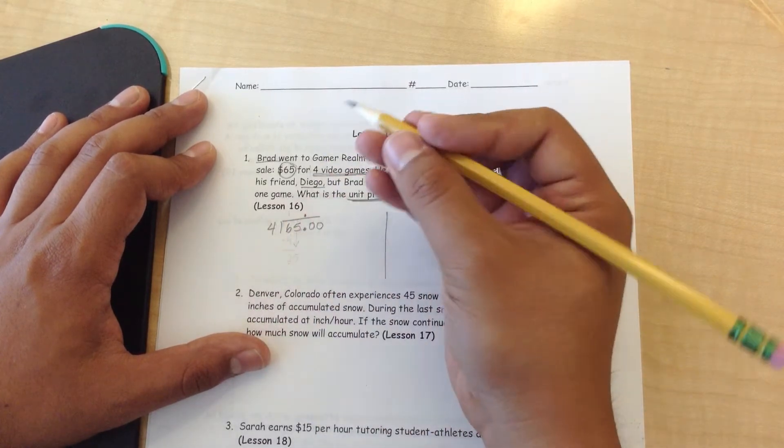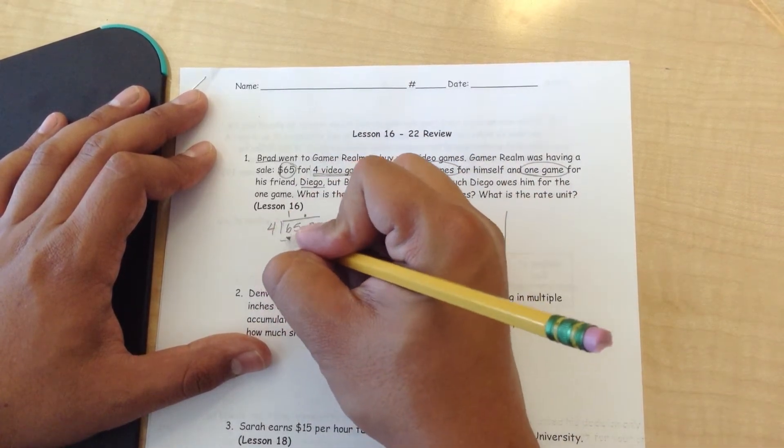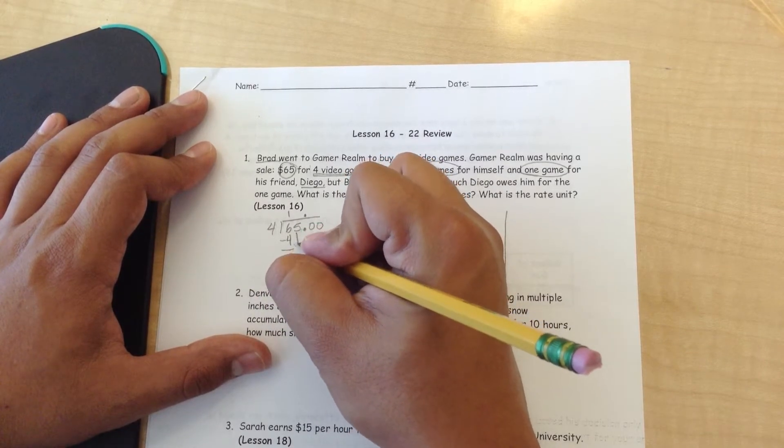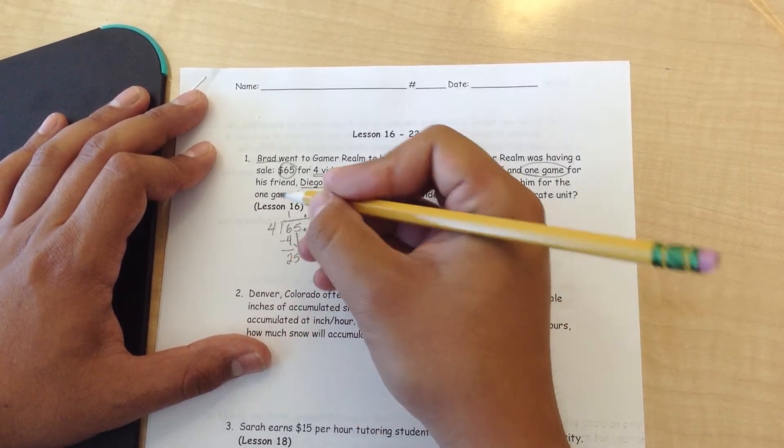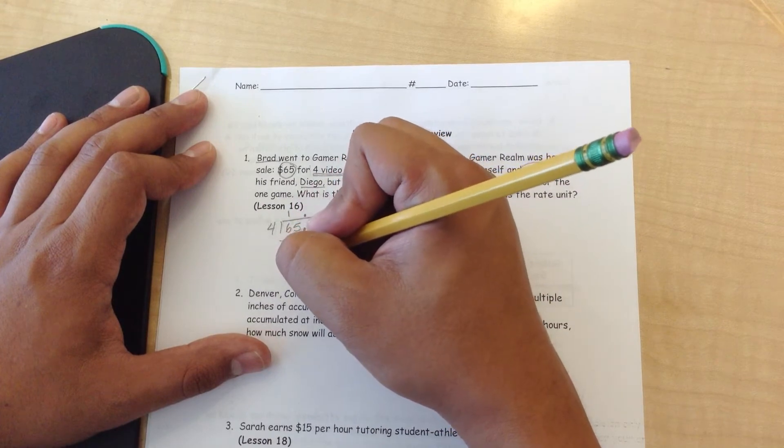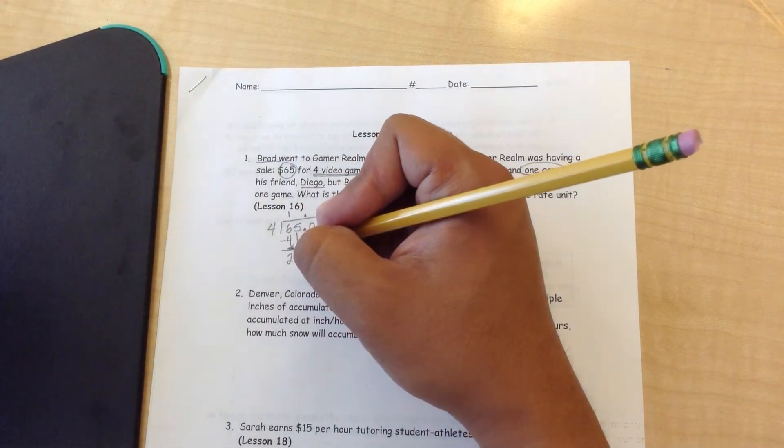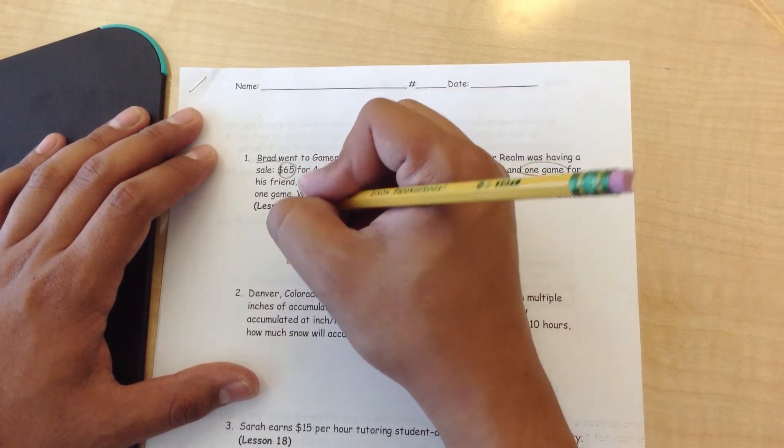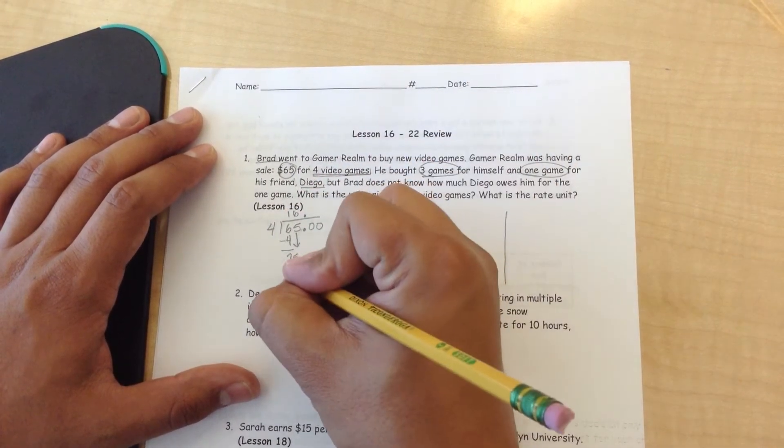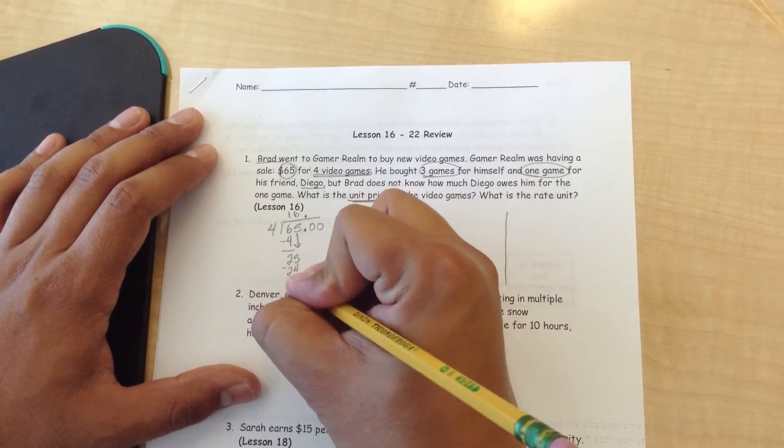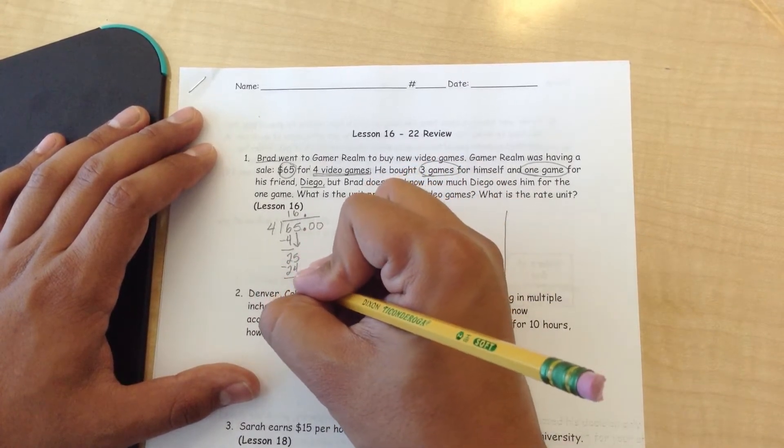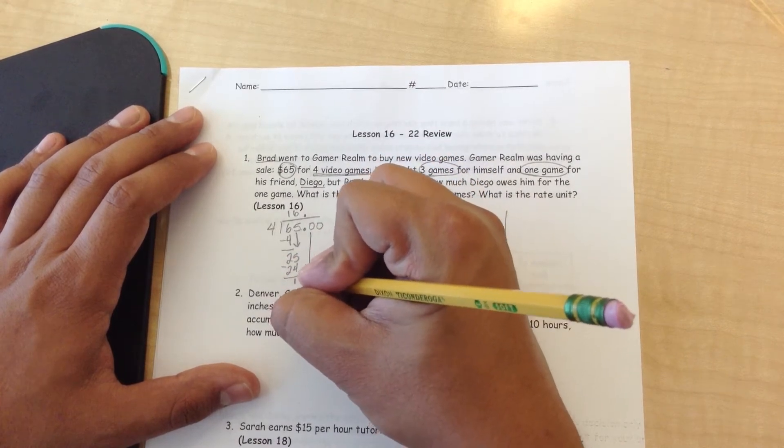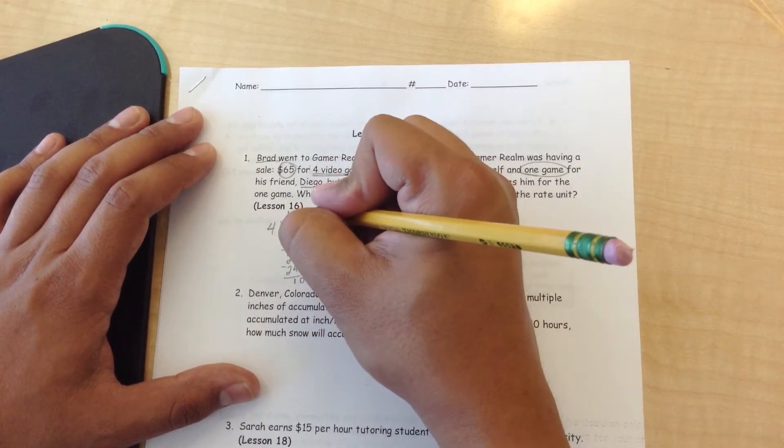So we figure out four goes into six one time, minus four. Six minus four is two. We bring the five down. Four goes into 25, so I have to figure out what multiple of four is the closest to 25. Four times six equals 24. Twenty-five minus twenty-four is one. Bring the zero down.